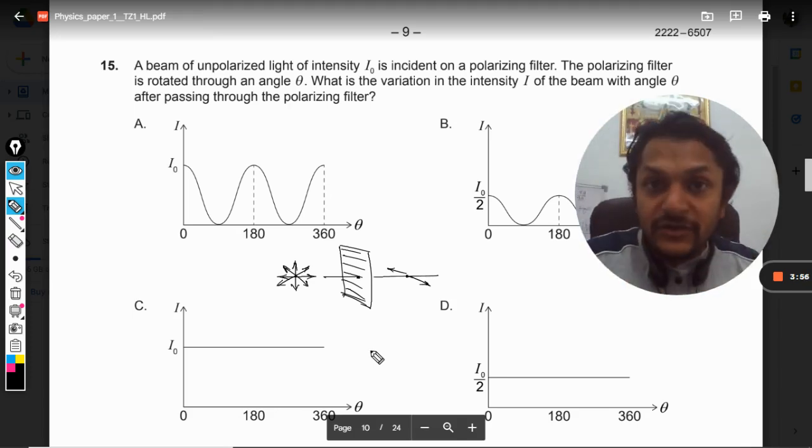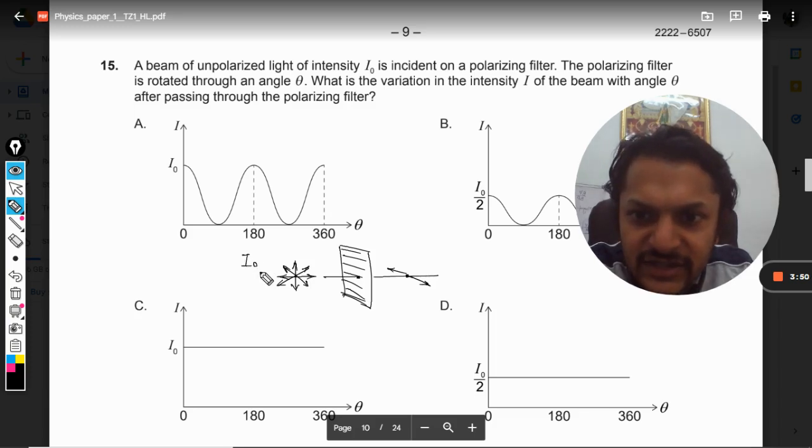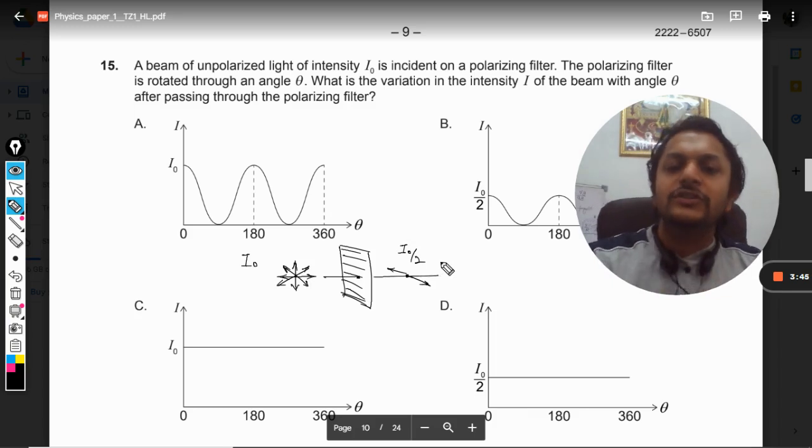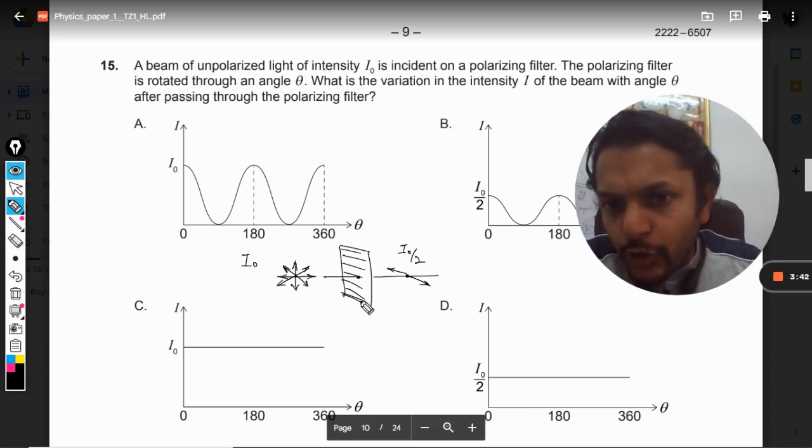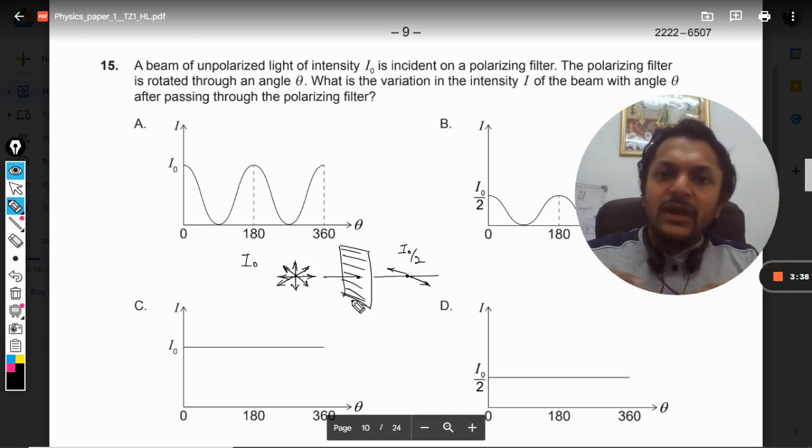But there is only one polarizer here, there is no second polaroid. So as a matter of rule, if the intensity here is I₀, the intensity here always becomes I₀/2. Why? Because this polaroid takes the cosine component of all of the electric field vectors into picture and eliminates the sine component.